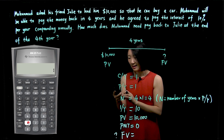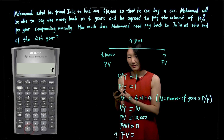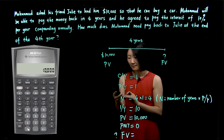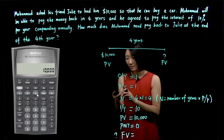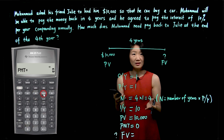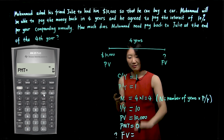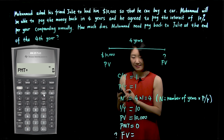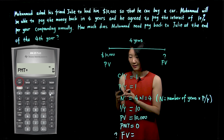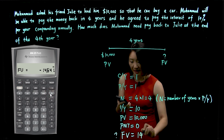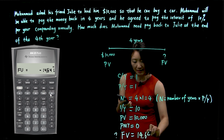For interest rate, IY is 10. PV is 10,000 — press PV. PMT is zero. The future value is unknown, but we already have these four numbers, so we'll be able to calculate future value by pressing compute FV.